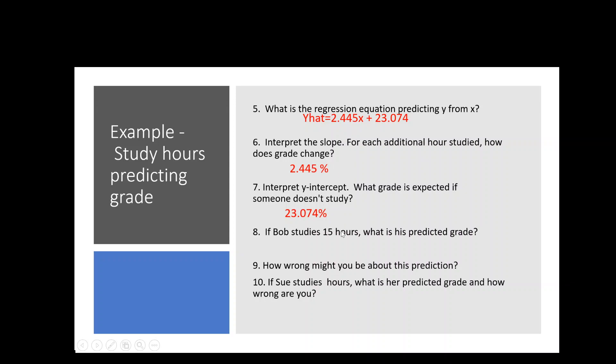Now let's do the fun stuff. Let's say Bob comes up and tells you, well, I studied 15 hours for this test. Let's predict what Bob would get for his grade. So we would plug his 15 into the equation we have up here. So for x, we're going to put in his 15. So we have 2.445 times his 15 hours plus the base of 23.074. So when we do that math, we get 59.75%. So we predict that Bob will get about 59.75% on the test.